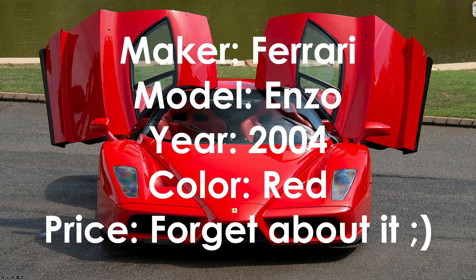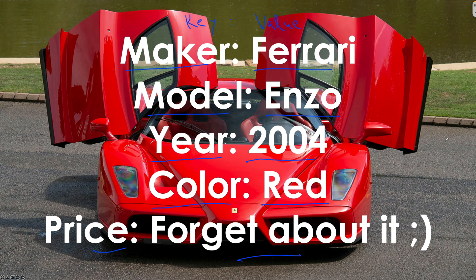The point is this key-value pair idea in JSON. 'Maker' becomes a key, 'Ferrari' becomes a value. 'Model' becomes a key, 'Enzo' becomes a value. 'Year' becomes a key, '2004' becomes a value. 'Color' becomes a key, 'Red' becomes a value — and so on. This is what the entire JSON structure is based around. Once you get this idea in your head, the rest is simple. Key-value pair is the big idea.